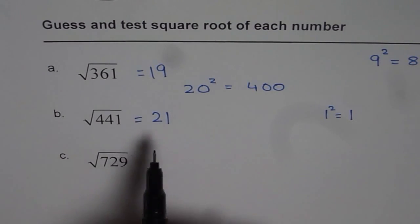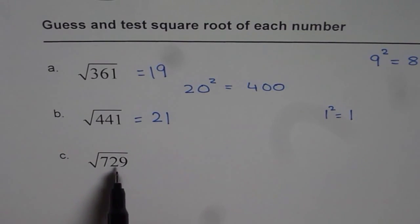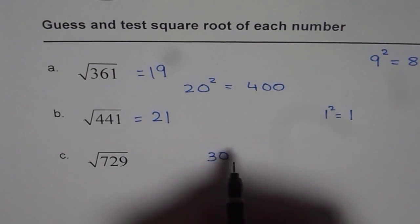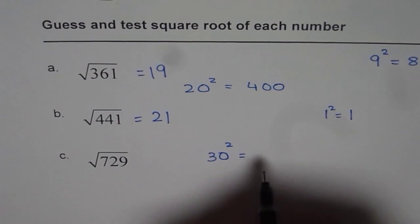We can always check with the help of calculator. Now let us get back to 729. Now 729, think about 30 square.